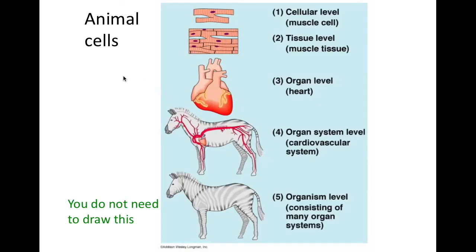For example, here we have animal cells — there are different kinds of cells that exist, and this is just one of them. Here we have a muscle cell. When many muscle cells are together, it creates muscle tissue. This muscle tissue creates the organ called the heart. The heart is part of a larger system — the circulatory system, or cardiovascular system — which works together with many other systems to create a whole organism.